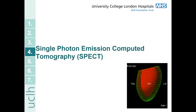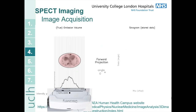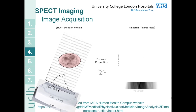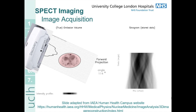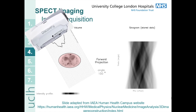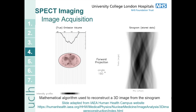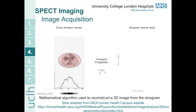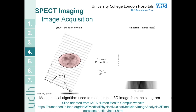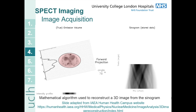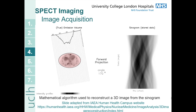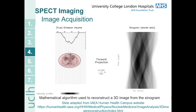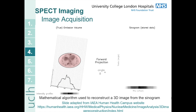Now we're going to move on to 3D imaging — SPECT imaging. To create 3D SPECT images the gamma camera rotates around the patient, acquiring data at different projections or angles. You can see the gamma camera rotating around the patient, recording an image at each of the different angles, and at each angle the data is stored in what's called a sinogram. We can then use a mathematical algorithm to reconstruct a 3D image from that sinogram.